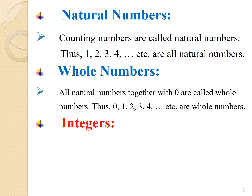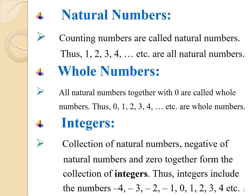Thus, we can say that positive numbers, 0, and the negative numbers together make a new collection called integers. In other words, the collection of natural numbers, negatives of natural numbers, and 0 together form the collection of integers. The integers include the numbers: minus 4, minus 3, minus 2, minus 1, 0, 1, 2, 3, 4, etc.